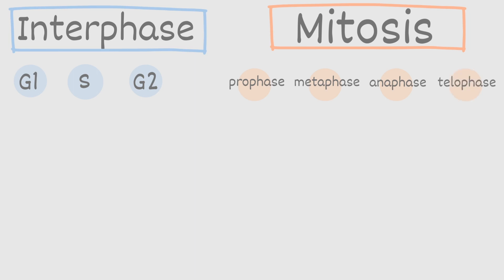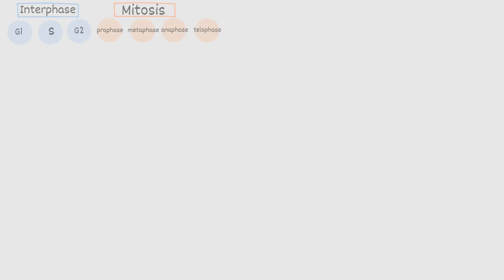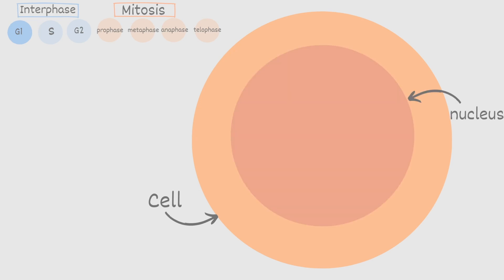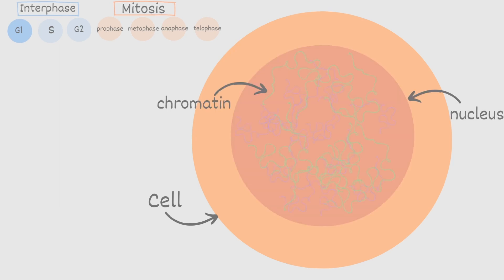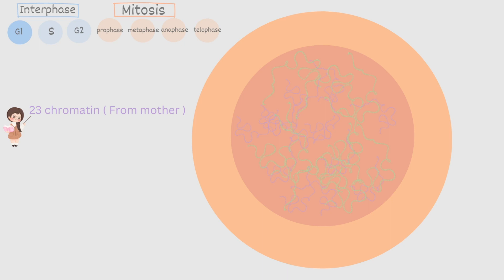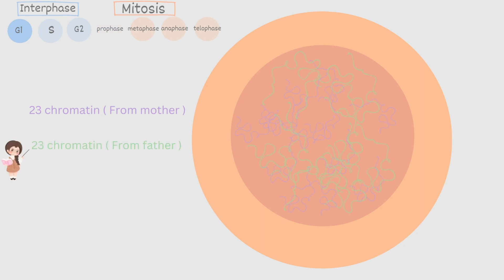Let's start off with G1 in the interphase. This is where all cells begin. Inside we have our nucleus, and inside the nucleus we have our chromatin. Remember, chromatin is a piece of DNA. At this point, this parent cell starts off with 23 chromatin from the mother and 23 chromatin from the father. The mother's genetic material is referred to as maternal and the father's as paternal.